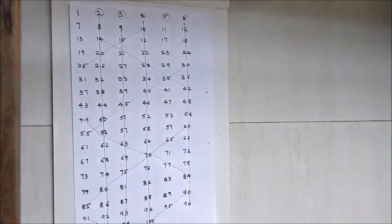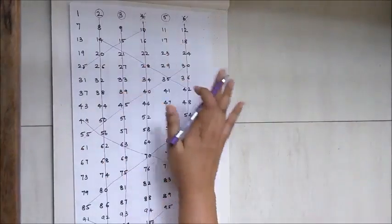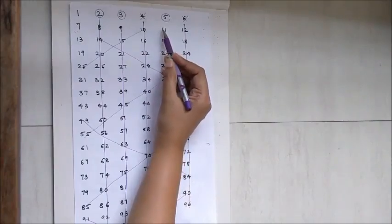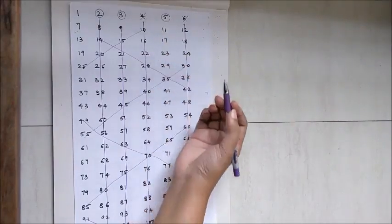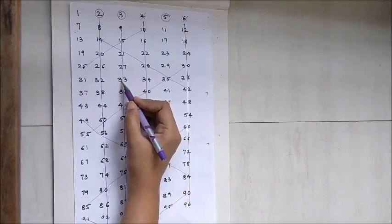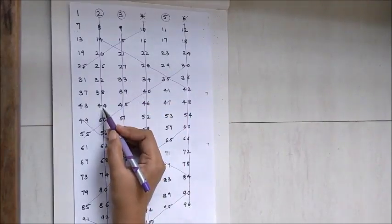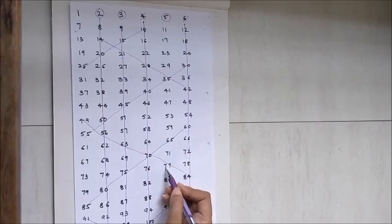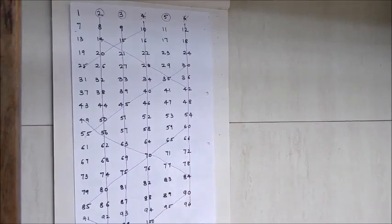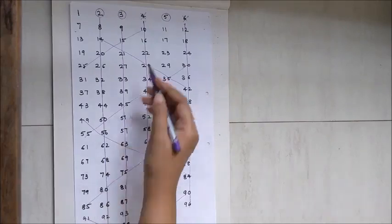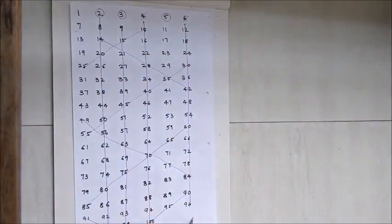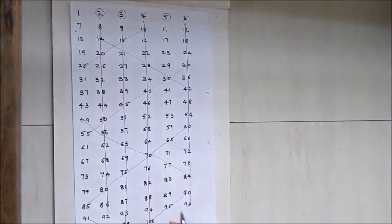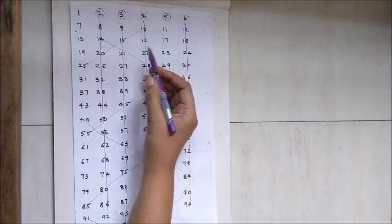The numbers left over are the prime numbers up to 100. To cross-verify, let's check with 11: 22, 33, 44, 55, 66, 77, 88, 99 — all multiples of 11 are already struck off. Since all multiples of 11 are already eliminated, we don't need to check for 13, 17, 19, and so on.